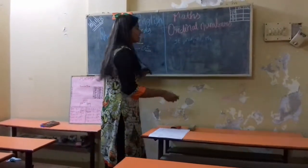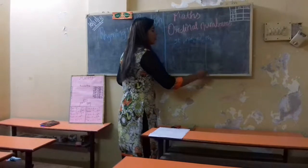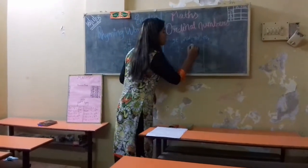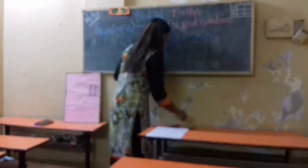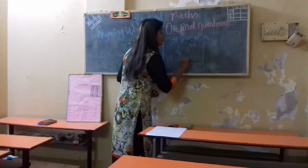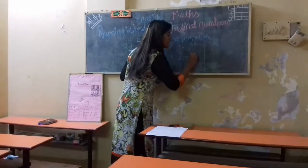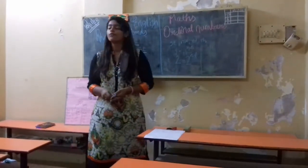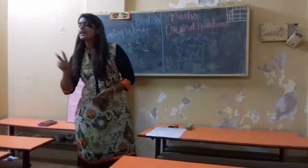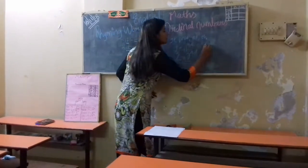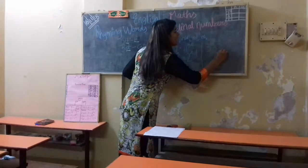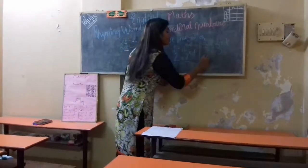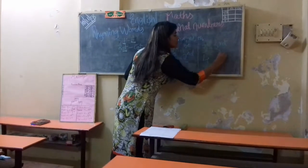So 1 is called as 1st. 2 is called as 2nd. 3 is called as 3rd. 4 is called as 4th.